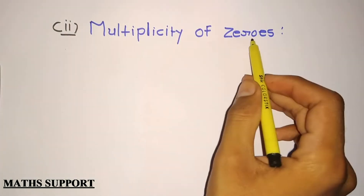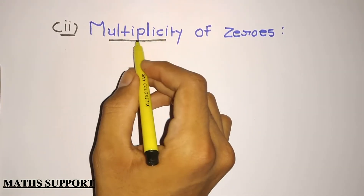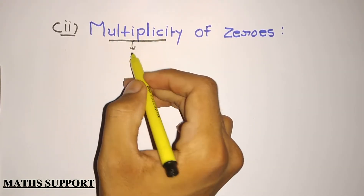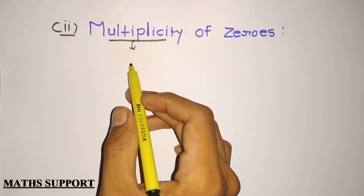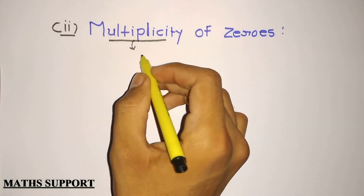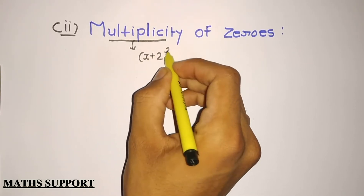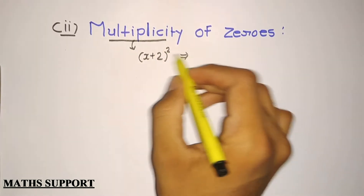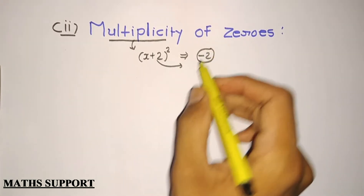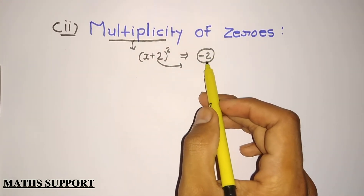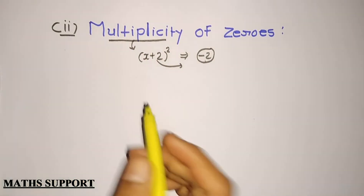Next is multiplicity of zeros. What is multiplicity? Multiplicity means how many times a particular root is repeating. If one of the factors is (x + 2) squared, that means your root, which is minus two, is repeating two times. So the multiplicity of minus two is two — that is multiplicity.